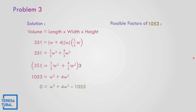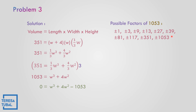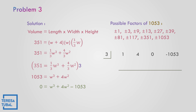Let us list the possible factors of 1053: positive and negative 1, 3, 9, 13, 27, 39, 81, 117, 351, and 1053. Our goal is to find a factor where the remainder equals 0. The numerical coefficients of the equation are 1, 4, 0, and negative 1053. Let us try positive 3: bring down 1, 1 times 3 is 3, 4 plus 3 is 7, 7 times 3 is 21, 0 plus 21 is 21, 21 times 3 is 63. The remainder is not equal to 0.